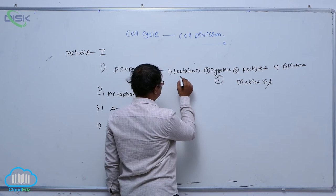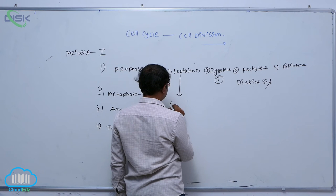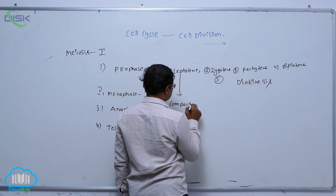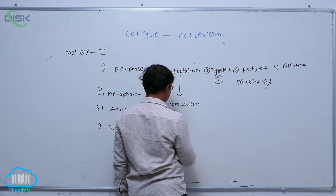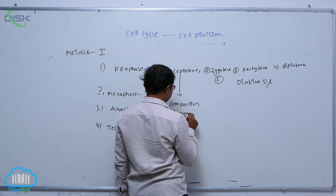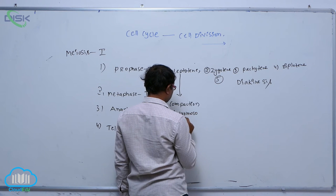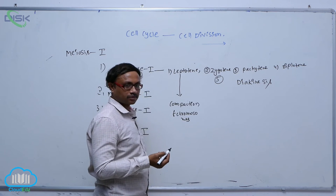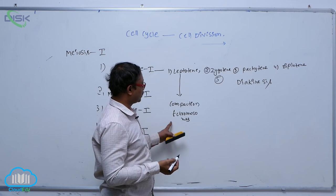Leptotene is indicated by compaction of chromosomes. It is completed. How it is identified means compaction of chromosome, that is the key point about leptotene.